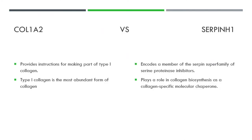Looking at the difference between these two genes: the col1a2 gene provides instructions for making part of type 1 collagen, which is the most abundant form of collagen in the body. The SERPINH1 gene encodes a member of the serpin superfamily — a serine proteinase inhibitor — and it plays a role in collagen biosynthesis as a collagen-specific molecular chaperone.